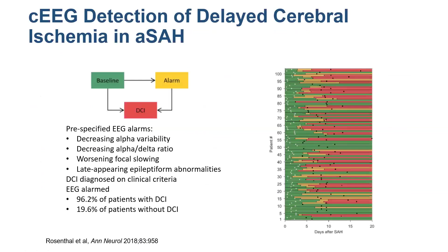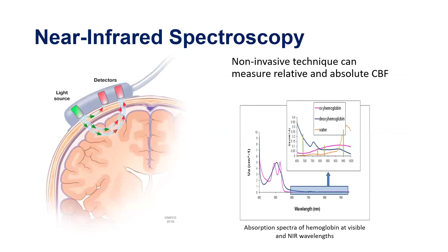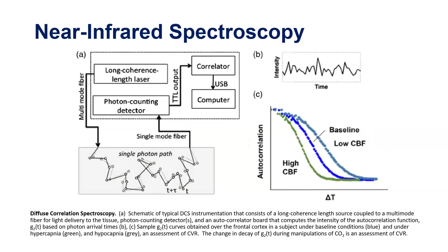EEG can be helpful for non-invasive monitoring — this is an example from the Mass General investigators, where Eric Rosenthal was first author on a paper using EEG to detect late cerebral ischemia after aneurysmal subarachnoid hemorrhage. A study we're very interested in doing at Penn is using near-infrared spectroscopy as a non-invasive tool to identify episodes of brain tissue hypoxia. The particular technique we're using is called diffuse correlation spectroscopy, which not only gives you an absorption spectrum of hemoglobin but also gives you a sense of cerebral blood flow.